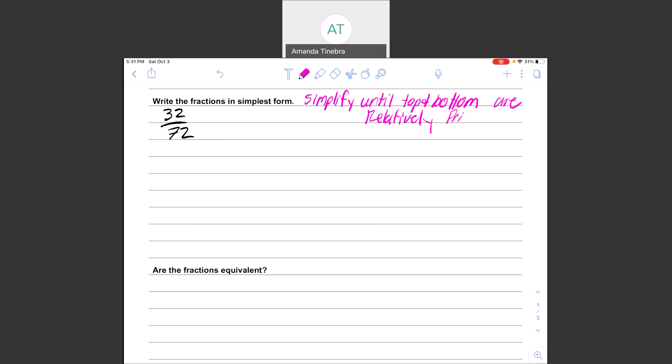That's what it means to write it in simplest form. I want to find a number that goes into both 32 and 72, a common factor. I see right away that they're both even, so maybe I start out by just dividing them both by 2. 32 divided by 2 is 16. 72 divided by 2 is 36. Next, I see that 16 and 36 are both divisible by 4. However you simplify them, it doesn't matter.